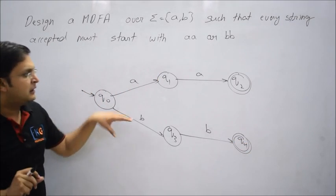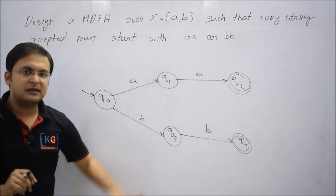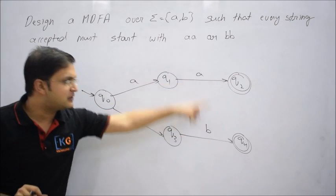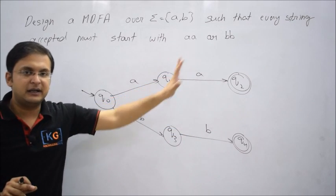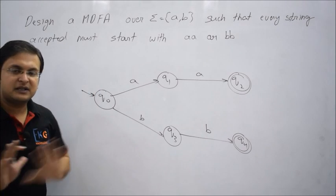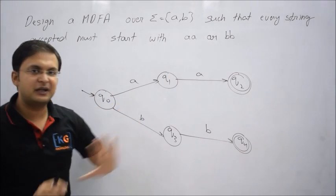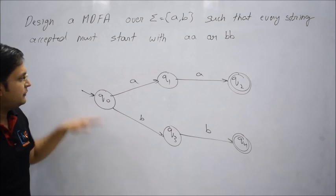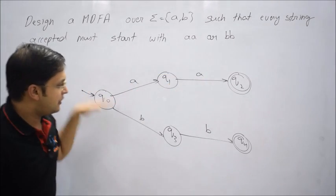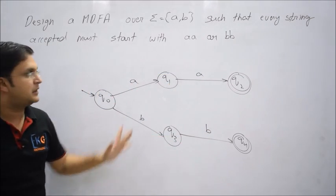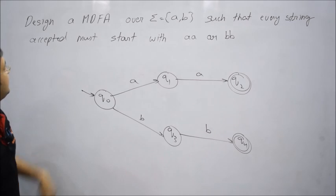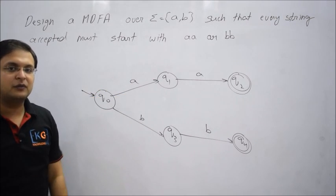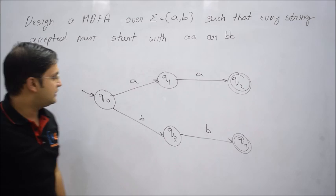At the initial stage of designing, have a separate state for each and be comfortable — we'll minimize it later. So either 'aa' or 'bb' are both acceptable. The condition is about starting. Now step number two is to complete this machine, because DFA is a complete system.